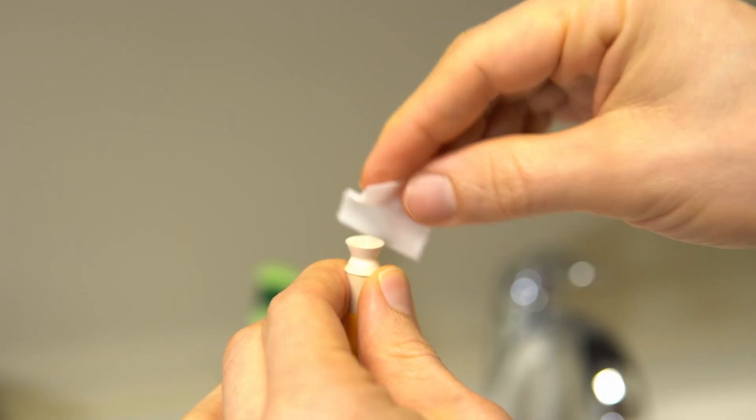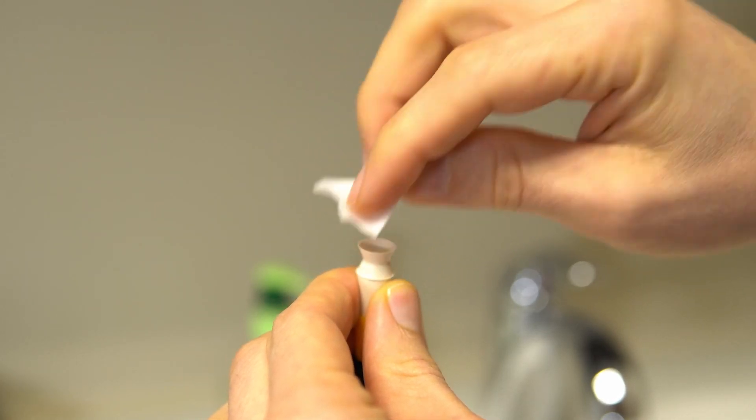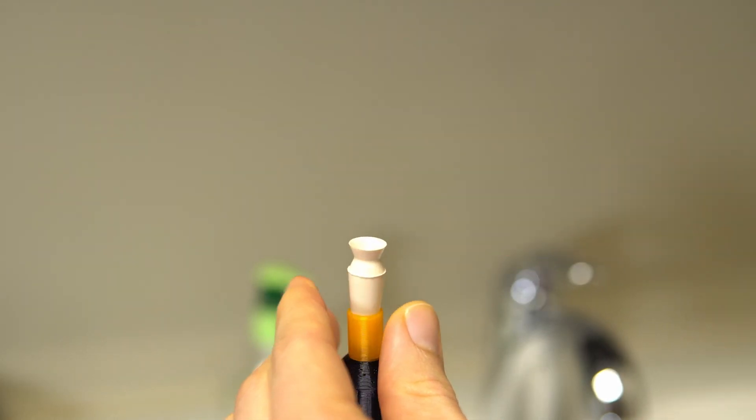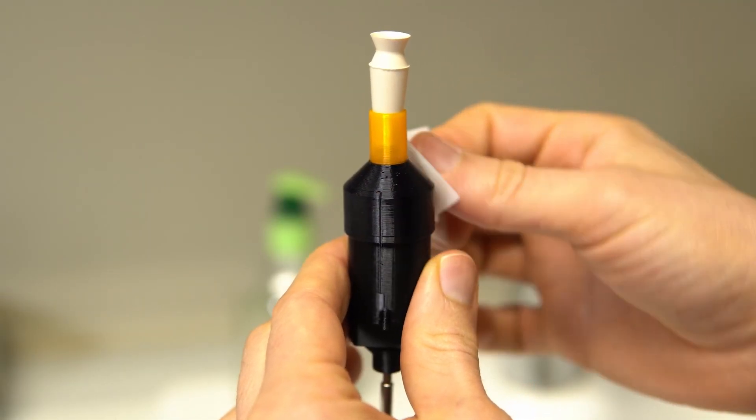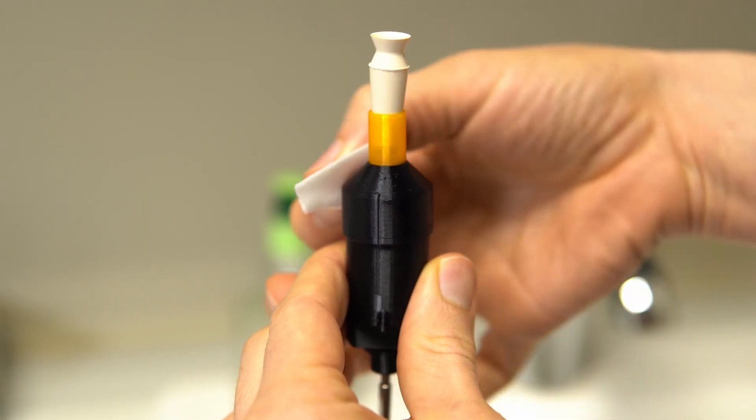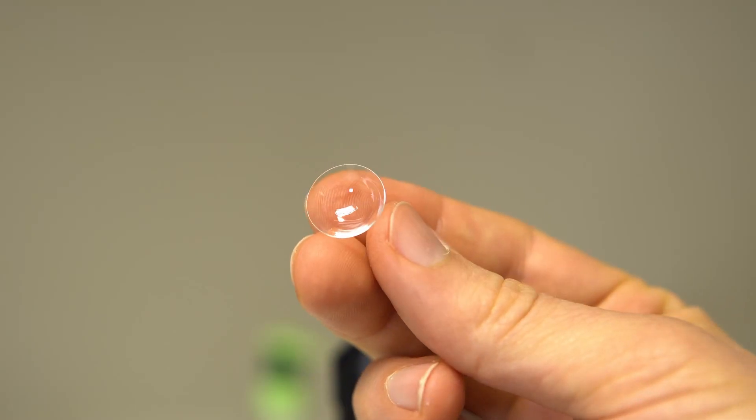Step six: clean the rubber lens holder with a disinfecting alcohol wipe. It's important to allow the lens holder to dry completely before placing your contact lens onto the holder. Step seven: clean the upper arm segment of the light unit, the part that twists, with a disinfecting alcohol wipe.